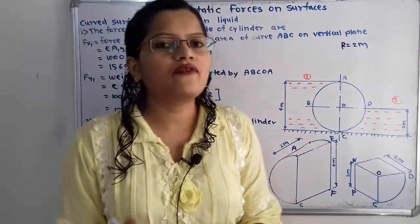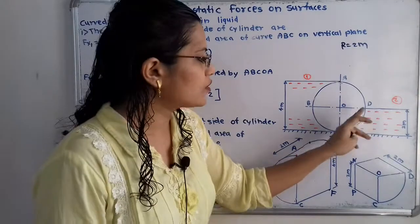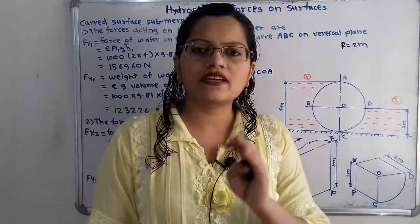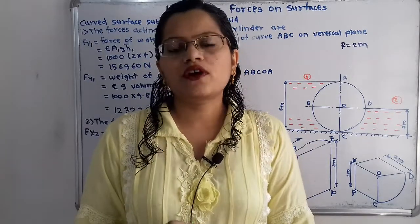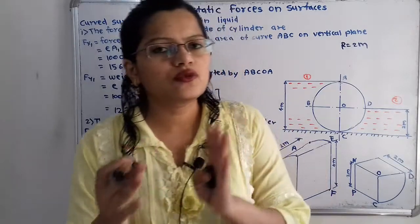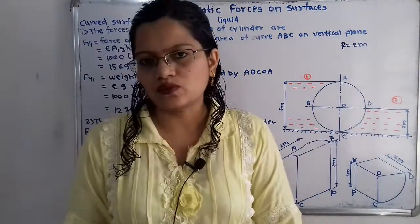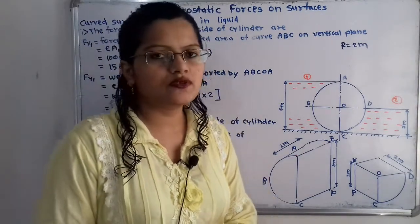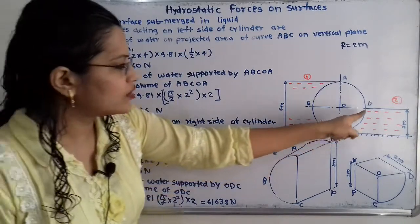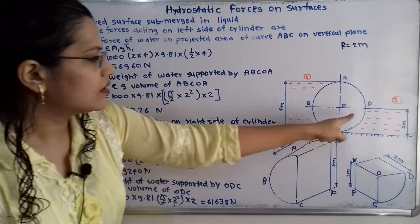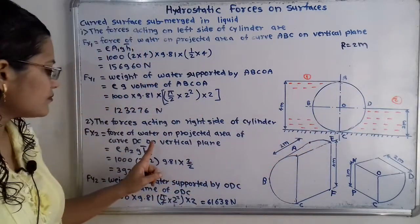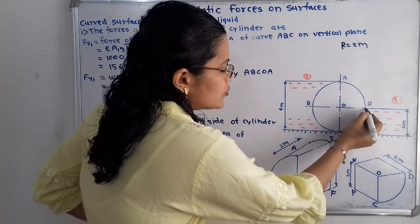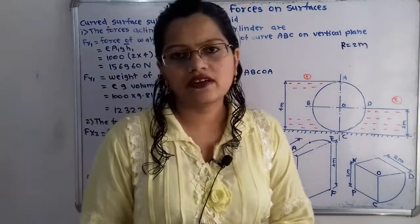The curvature on the right side also has a pressure force from the water acting in the inclined direction, so we again resolve it into two components, FX2 and FY2, using suffix 2. We will calculate FX2, which is the force of water on the projected area of the curve CD on the vertical plane.